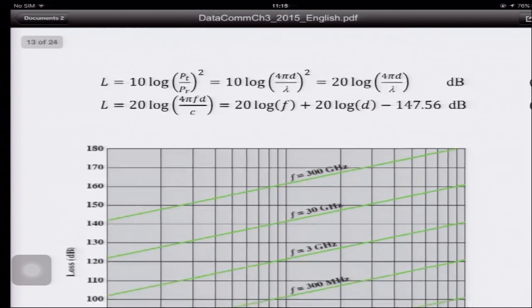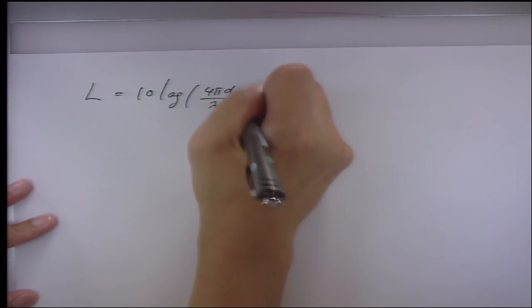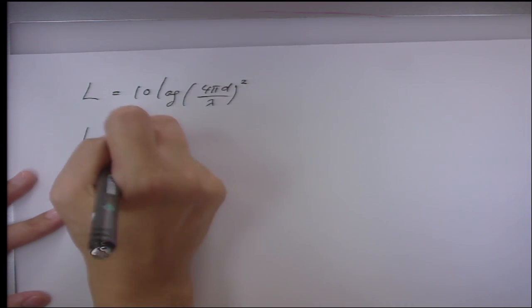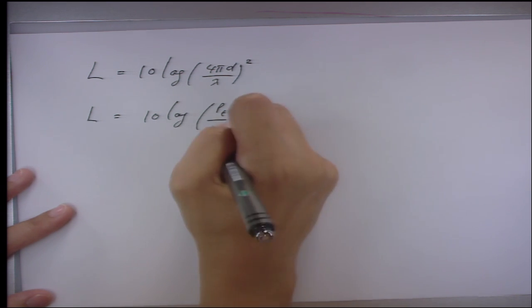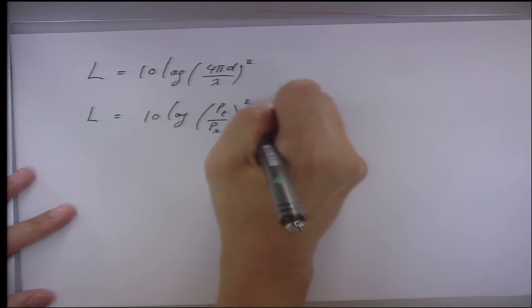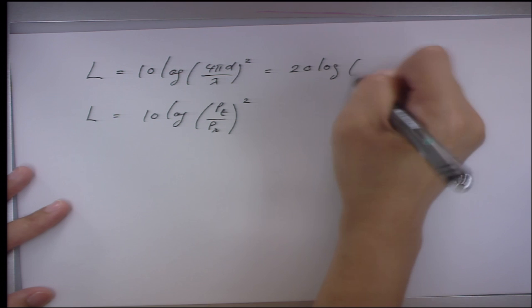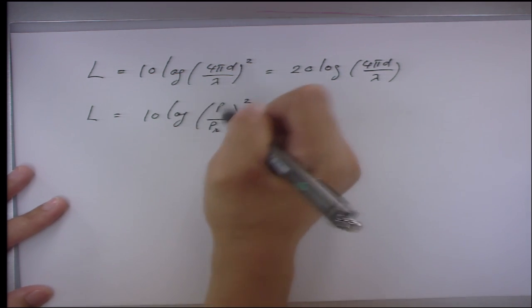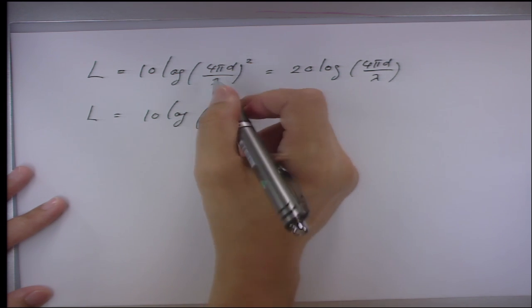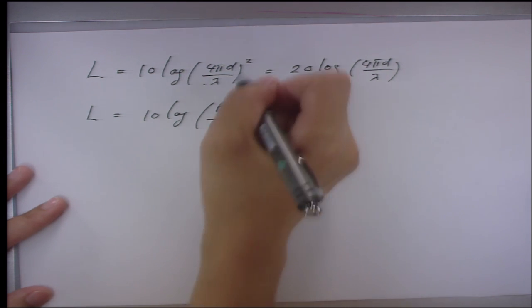The general loss formula is: L = 10 × log(P_transmit / P_received), which equals 20 × log(4πd/λ). We can use this equation when we know the transmitting and receiving power, or when we know the distance, wavelength, and frequency. These are the general and microwave-specific loss equations.